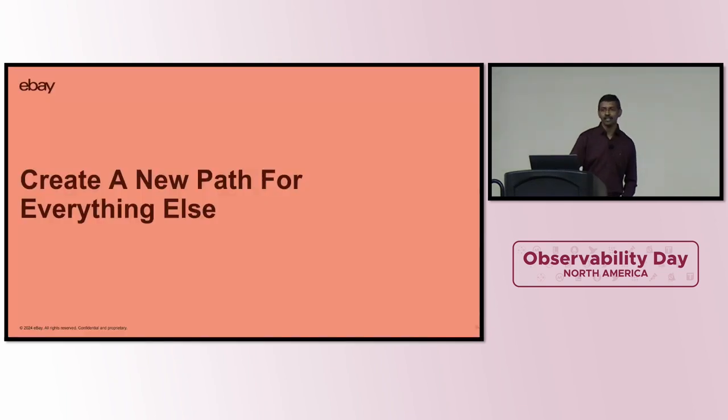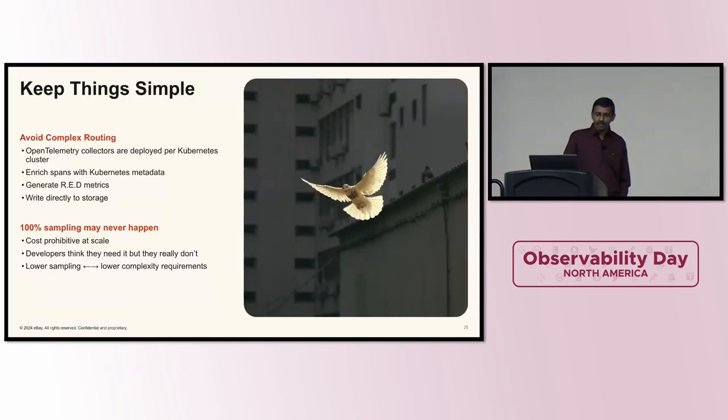For things that were not solvable through either the SDKs or the collector, we created a new path, where with regards to the architecture itself, we tried to keep things simple. I'm a big believer that if you're trying to complicate things, then you're not doing it the right way. What we ended up doing is we have a per-cluster installation of OpenTelemetry collectors, where you generate red metrics within the cluster itself. And we write directly to storage through our gateway. No message bus, nothing. Where we try to pick one shard per trace ID and write all the trace IDs into the single shard. We basically convinced everyone around, saying that 100% sampling is never going to happen. It's cost prohibitive. People are not going to use it. And the lower the sampling, the lower the complexity requirements, which means that you're not going to complicate the architecture.